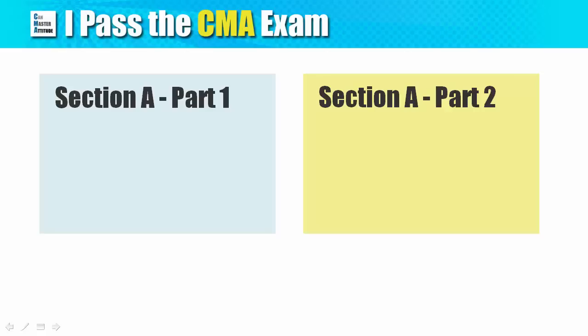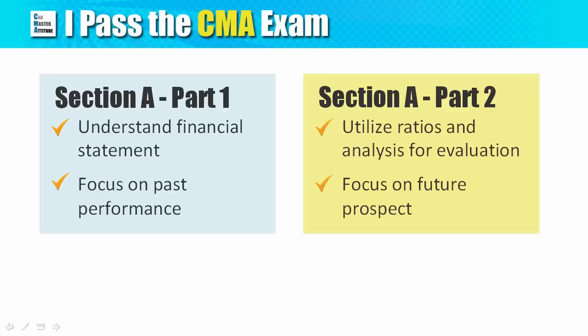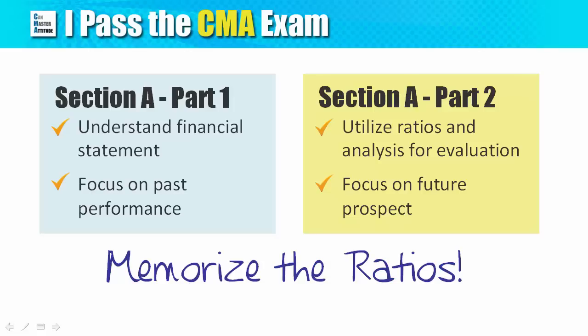In other words, Section A Part 1 is more on understanding past performance using financial statements, while Section A Part 2 focuses on evaluating future prospects. CMA exam candidates should be very familiar with these ratios and tools. I suggest that you memorize the formulas of all key ratios. You will also need to know the applications and understand how external investors use them to evaluate the company's financial health.